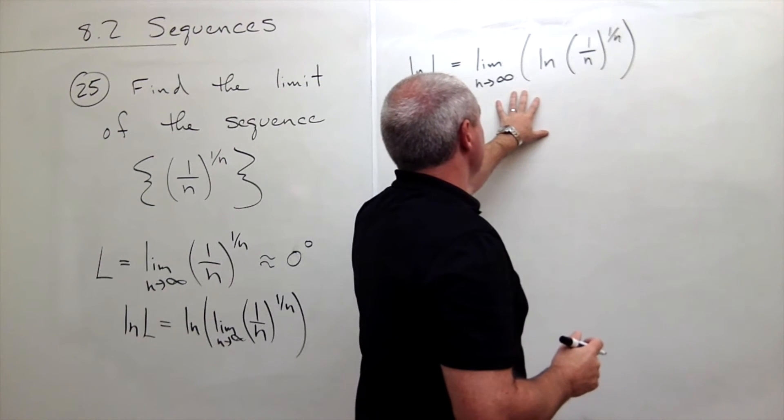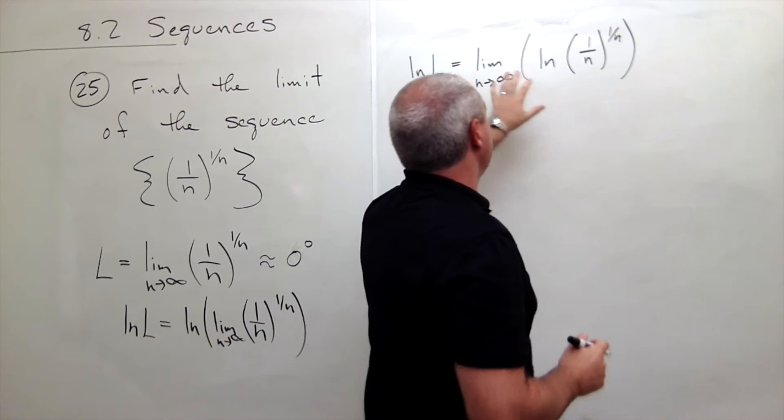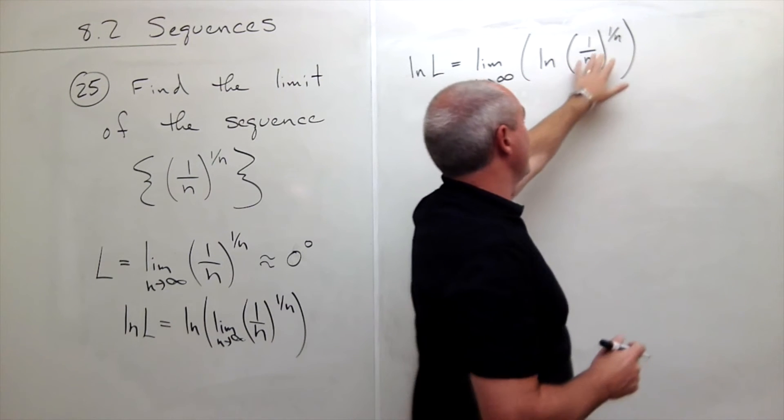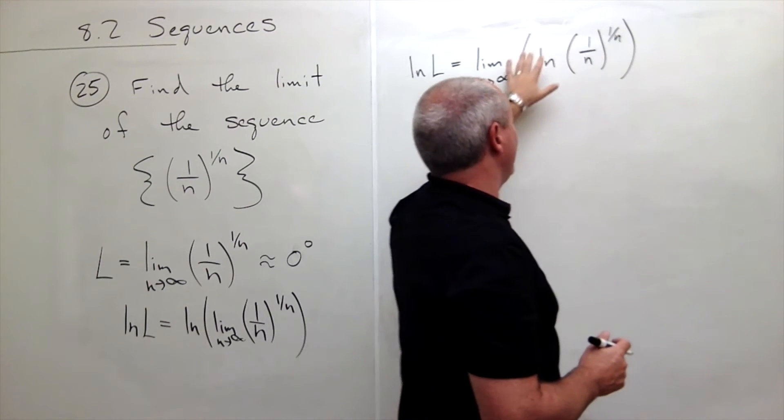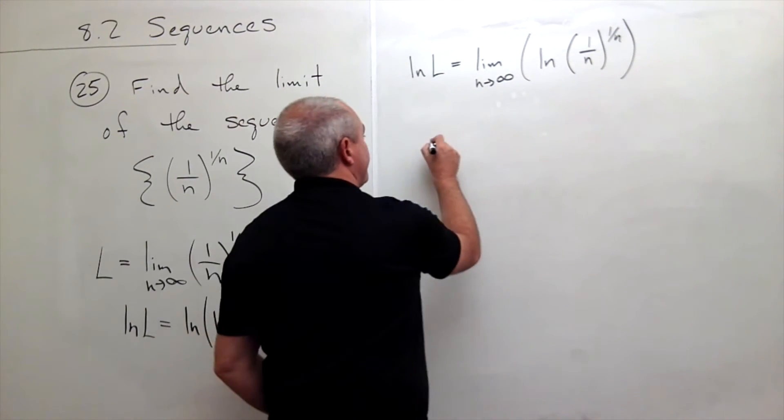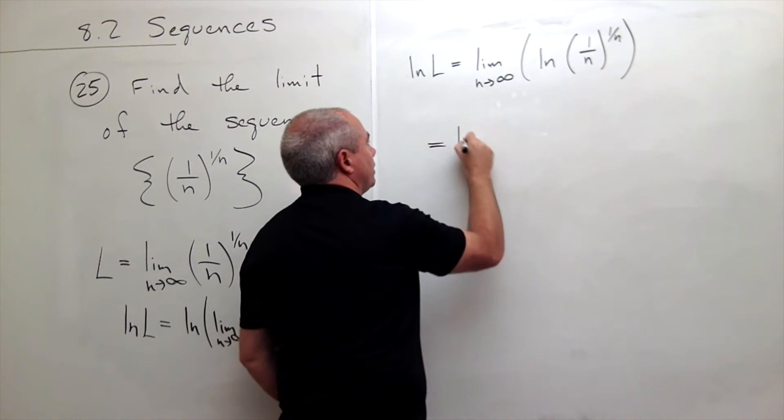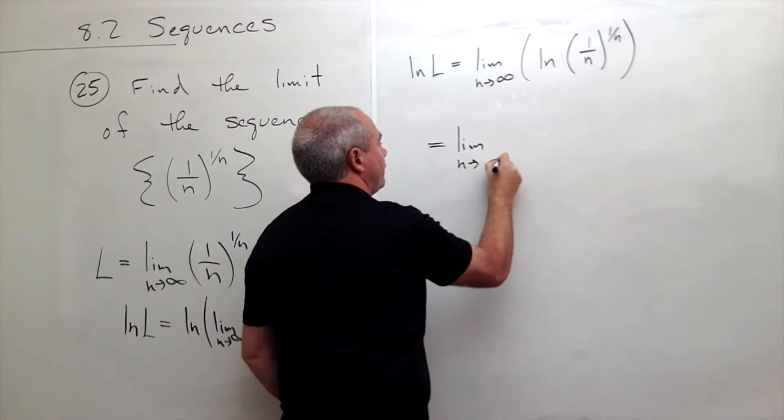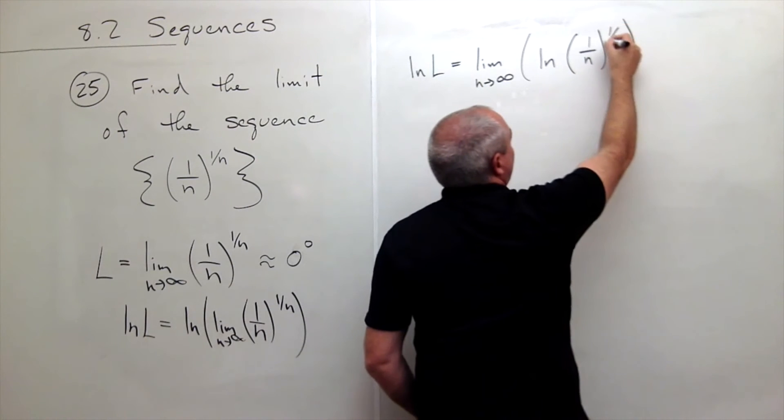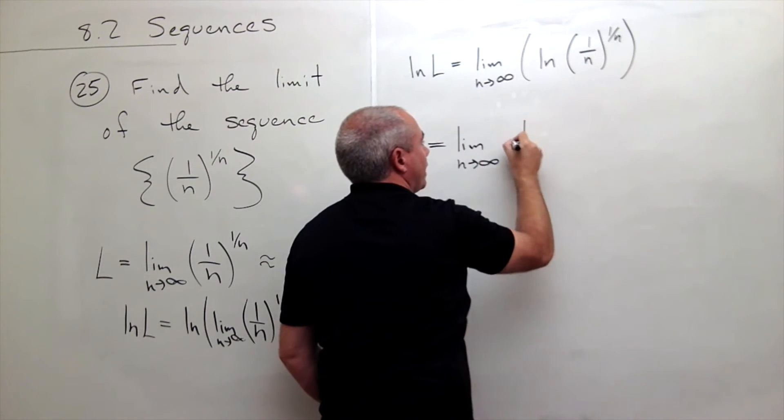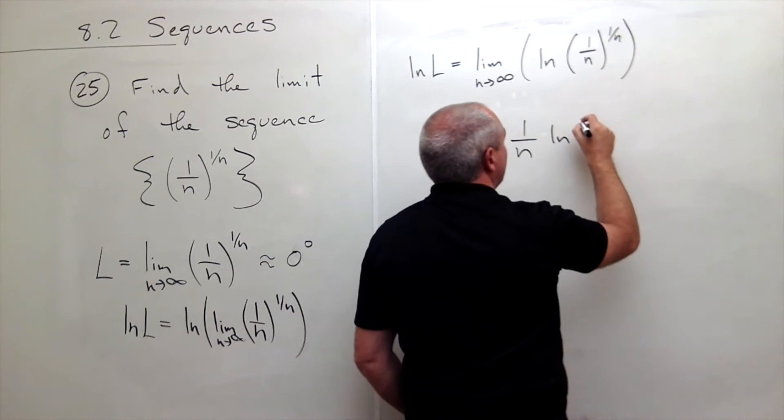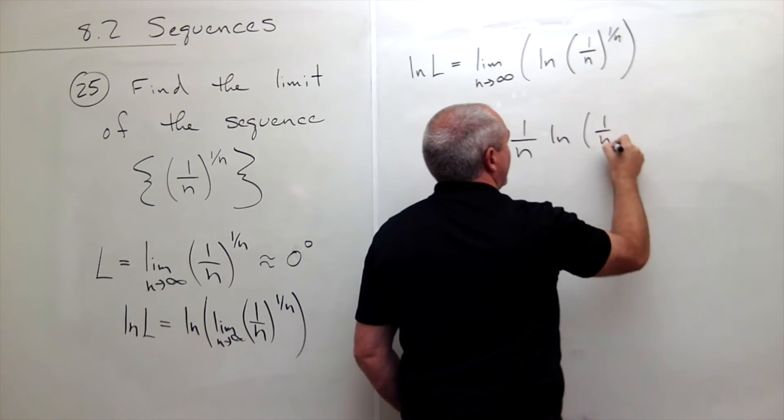So we've got this set up and ready to go. How this helps me is now I have ln of something raised to a power. I can pull that power out in front of the natural log. So this is equal to the limit as n goes to infinity of, I bring that power 1 over n out in front. I get 1 over n times ln of 1 over n.